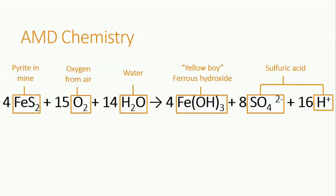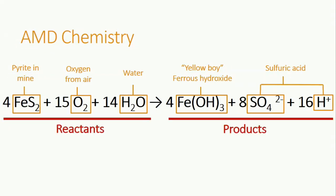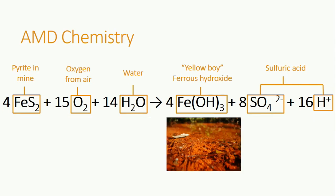There are several chemical steps to produce acid mine drainage, but this is the summary reaction. The reactants — pyrite from the mine, oxygen from the air, and water from humidity, precipitation, or a stream — combine and produce ferrous hydroxide, also called yellow boy, and sulfuric acid. Yellow boy is that yellow-orange precipitate that we talked about earlier.